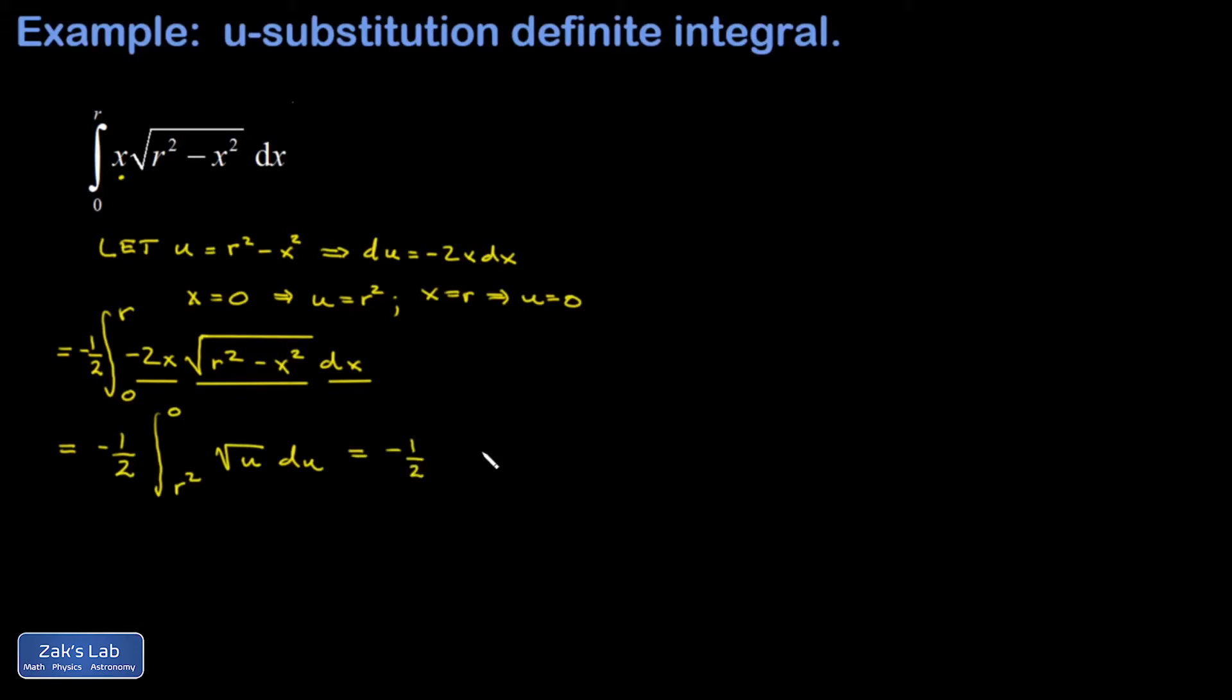Remember the square root of u is the same as u to the one half and we use the power rule. We add one to the exponent and divide by the result, so I get u to the three halves divided by three halves which is the same as multiplying by two thirds. I'll go ahead and cancel those twos right now.